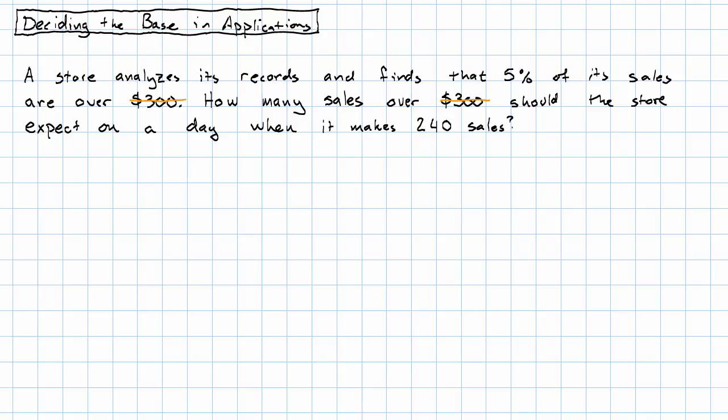This problem is telling us about a percent of the sales at the store, and it's telling us how many sales are made. What it's telling us about some of the sales is that they're over $300, and then it's asking us how many things like that we see in a day. So this really is a percent-related problem because we're being told a percent and the base and asked to find out the amount.